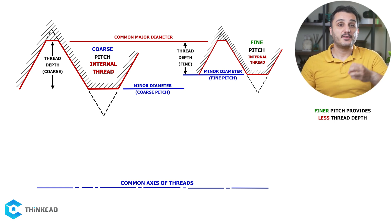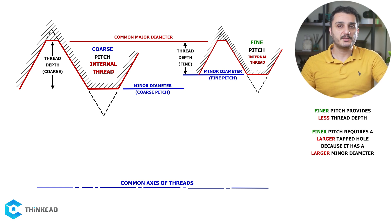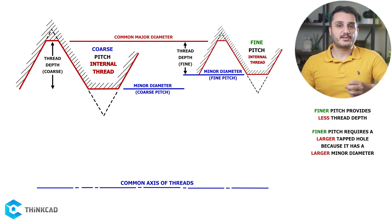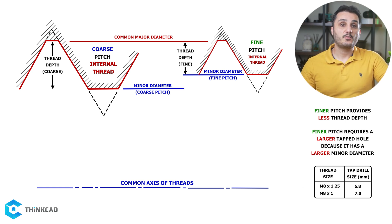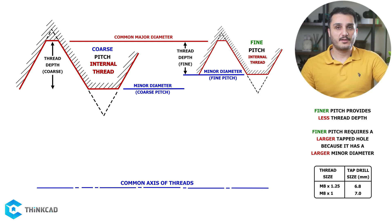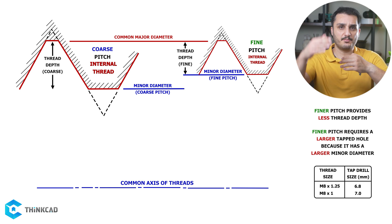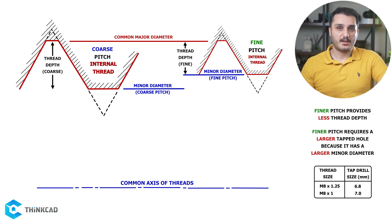For a given thread size, the finer your pitch, the larger your tap drill needs to be, because a finer pitch means a larger minor diameter for an internal thread. There are standardized values for tap drill sizes for a given thread size and pitch. For example, an M8 thread with a coarse pitch of 1.25 mm requires a tap drill of 6.8 mm before engaging the threading tool. For the same M8 thread with a fine pitch of 1 mm, the tap drill hole is 7 mm — 0.2 mm larger. This comes from the fact that the finer pitch has less thread depth and pushes both major and minor diameters closer to each other.